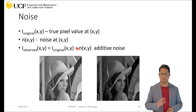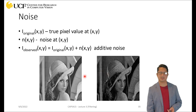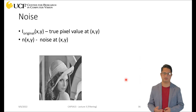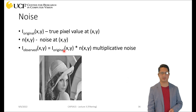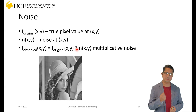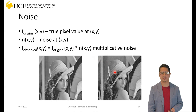We can also have a different model where instead of adding noise, we multiply it — that's called multiplicative noise. So this is the clean image, and if we have some noise function and multiply it with the pixel value, you will observe an image like the example shown. There are many varying kinds of noise models, but the key idea is we can represent noise mathematically.